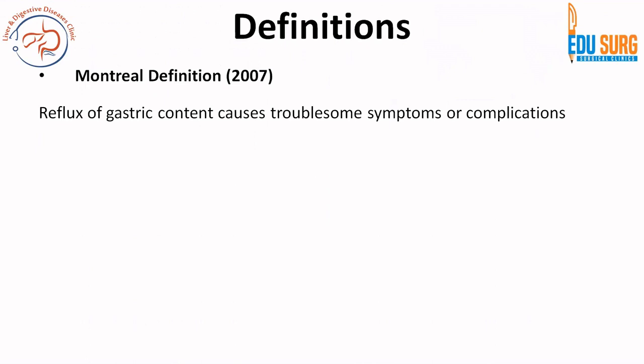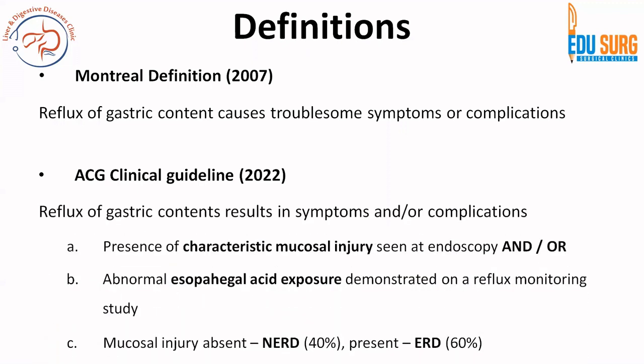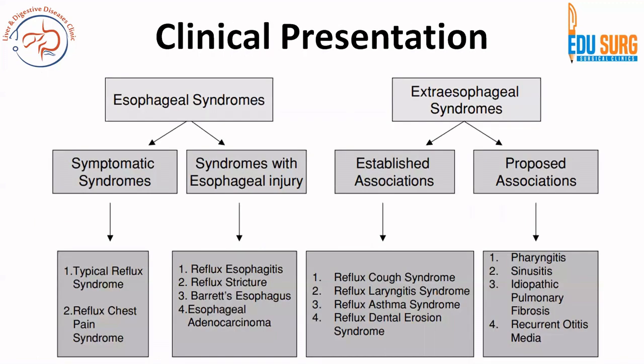The Montreal definition of GERD describes it as reflux of gastric content causing troublesome symptoms or complications. The ACG 2022 definition similarly defines it as reflux of gastric content resulting in symptoms or complications, with three components: if endoscopy shows mucosal injury, it is erosive reflux disease; if mucosal injury is absent, it is non-erosive reflux disease; or if reflux pH monitoring or impedance pH monitoring shows abnormal esophageal acid exposure, that also confirms GERD.